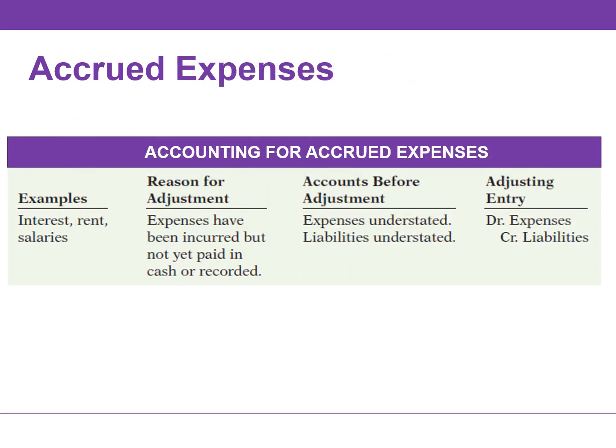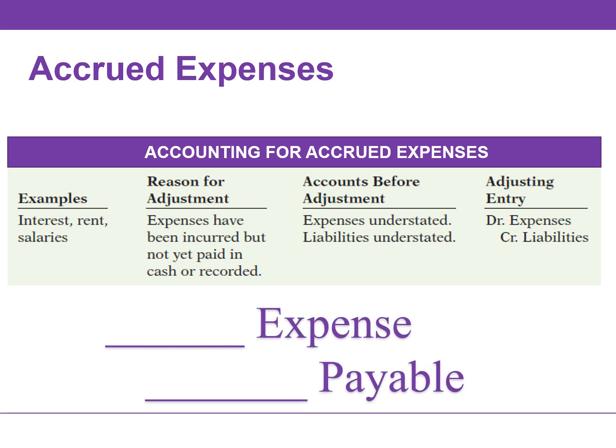Expenses incurred but not yet paid or recorded at the statement date are called accrued expenses. Interest, taxes, utilities, and salaries are common examples. Without this adjusting entry, liabilities and expenses are understated. The adjusting entry debits an expense account and credits a liability account. Hopefully you noticed the pattern: in the first example, we debited interest expense and credited interest payable; in the second example, we debited salary and wages expense and credited salary and wages payable.